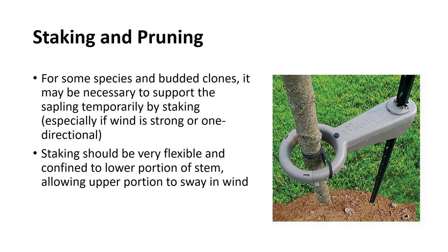For some other species and for budded clones, it may be necessary to support the sapling temporarily by staking. This is especially true if the growing sites are exceptionally windy or the primary winds are one-directional. If staking is done, it should be very flexible and confined to the lower portion of the stem, allowing the upper portion to sway in the wind.